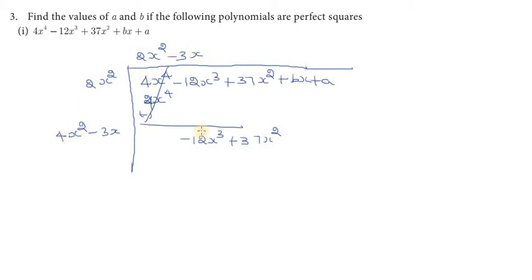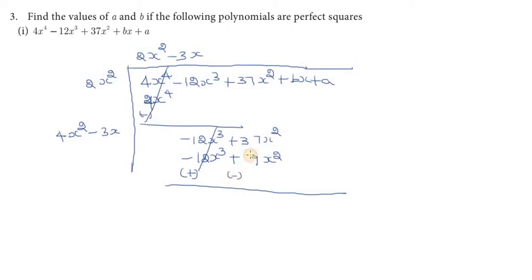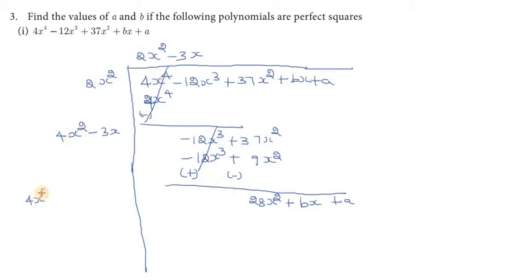Then minus 4x cubed. We multiply the 4x cubed. Then minus 1 into minus — plus, 3 threes are 9, x into x squared. It will be simple since we did not multiply the time. This will cancel. So 4x squared minus 6x, and 4x squared plus A.